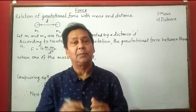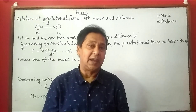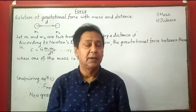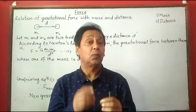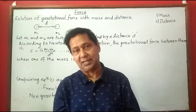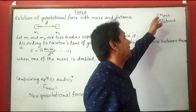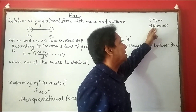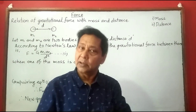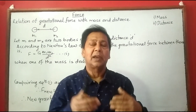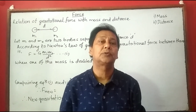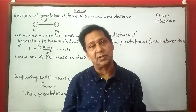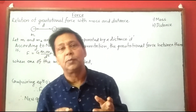This class is designed to help the student of class 10 who are preparing for SE examination. We are continuing the same chapter on force, but today's focus is on the relation between the gravitational force between two bodies with mass and distance. If mass increases, gravitational force increases. If distance increases, gravitational force decreases. According to Newton's law of gravitation, the gravitational force between two bodies is directly proportional to the product of their masses and inversely proportional to the square of the distance between their centers.